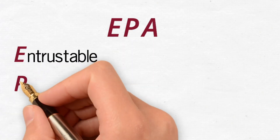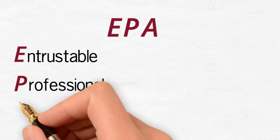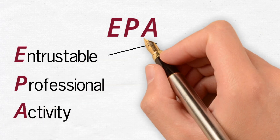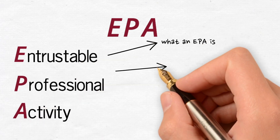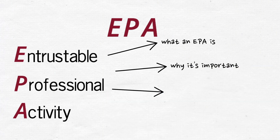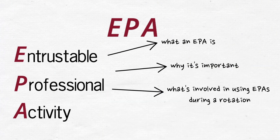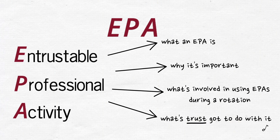This video was created to introduce you to a very interesting way of thinking about both learning and teaching. It's demonstrating something called an entrustable professional activity, or EPA. We will cover what an EPA is, why it's important, what's involved in using EPAs during a rotation, and what trust has got to do with it.